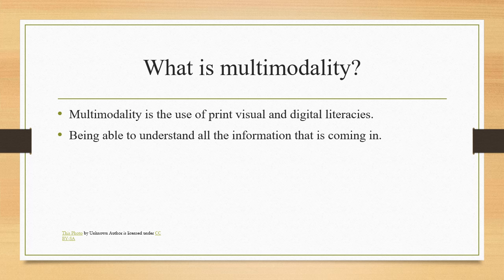Visual literacy is everything that you see with your eyes. Linguistic literacy is all things that are written. Oral is all things that you say and hear. Spatial literacy is knowing when, where, how, and why things are written. And gestural literacy is reading body language and the register of the voice that is being used or heard.